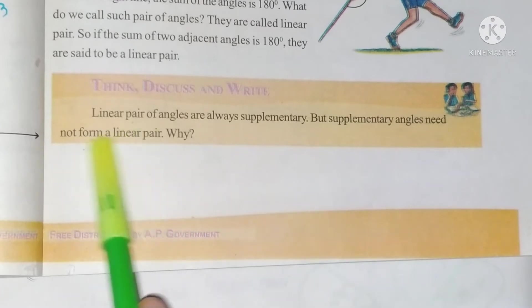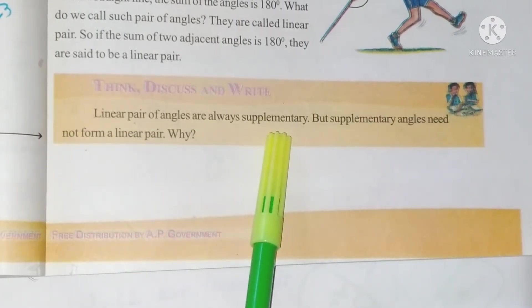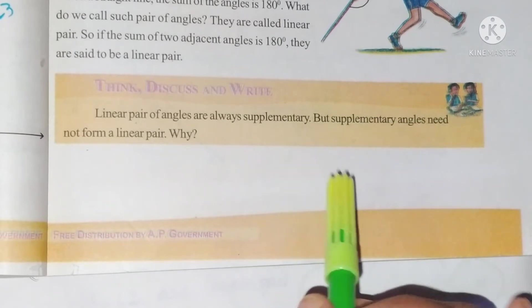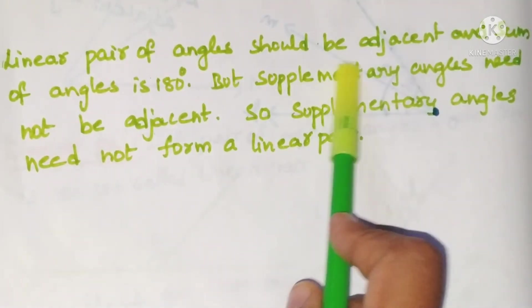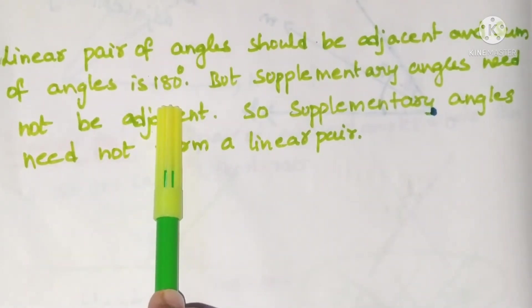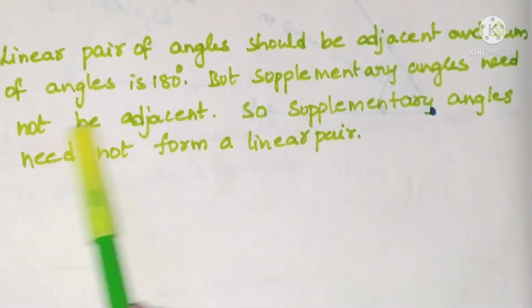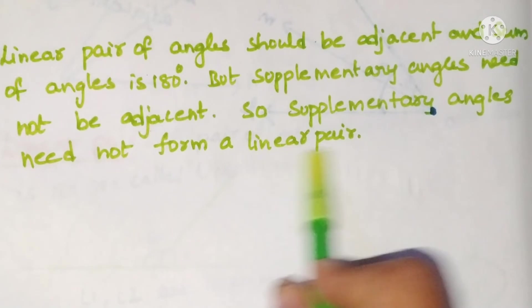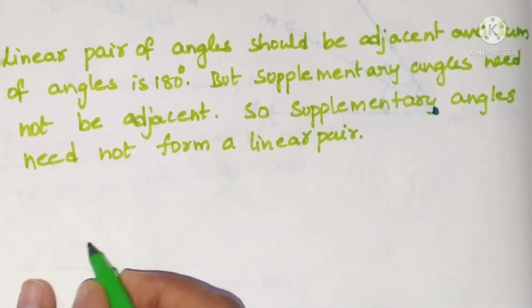From the textbook page 77, think, discuss and write: linear pair of angles are always supplementary, but supplementary angles need not form a linear pair. Linear pair means the sum equals 180 and the angles must be adjacent. Supplementary angles only require a sum of 180 — they need not be adjacent — so supplementary angles need not form a linear pair.